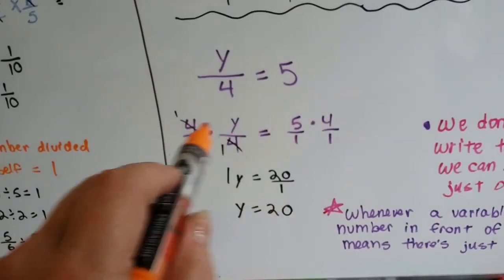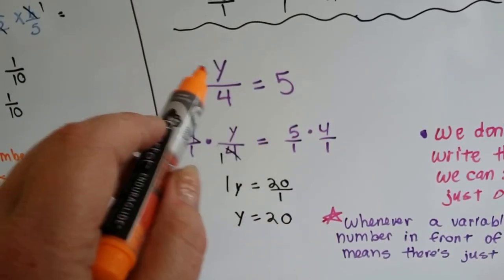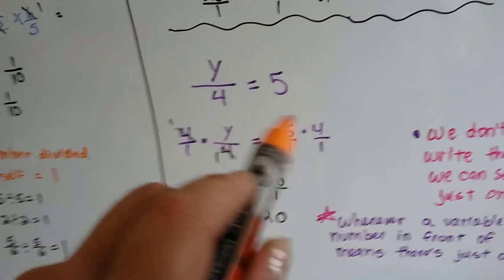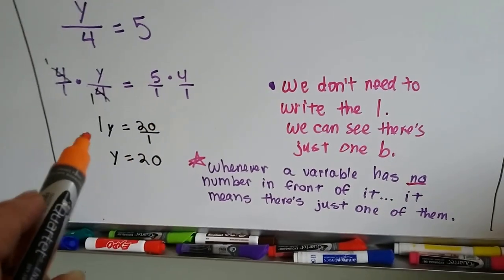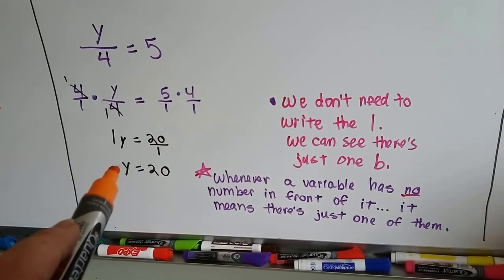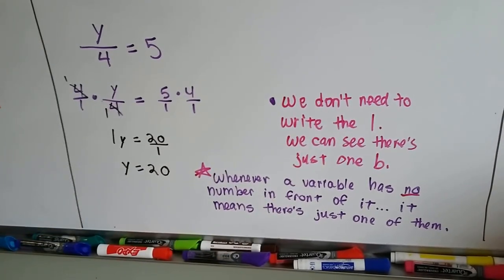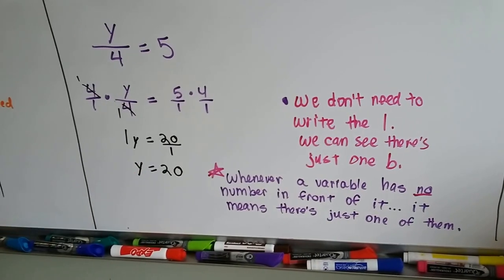So we can use multiplication to multiply each side of a division problem, because fractions are little division problems, to help us solve them. So remember, we don't need to write the 1. When we just see a b or a y or an x, we know that there's just one of them there. And whenever we see a variable by itself, we know there's an invisible 1 in front of it.